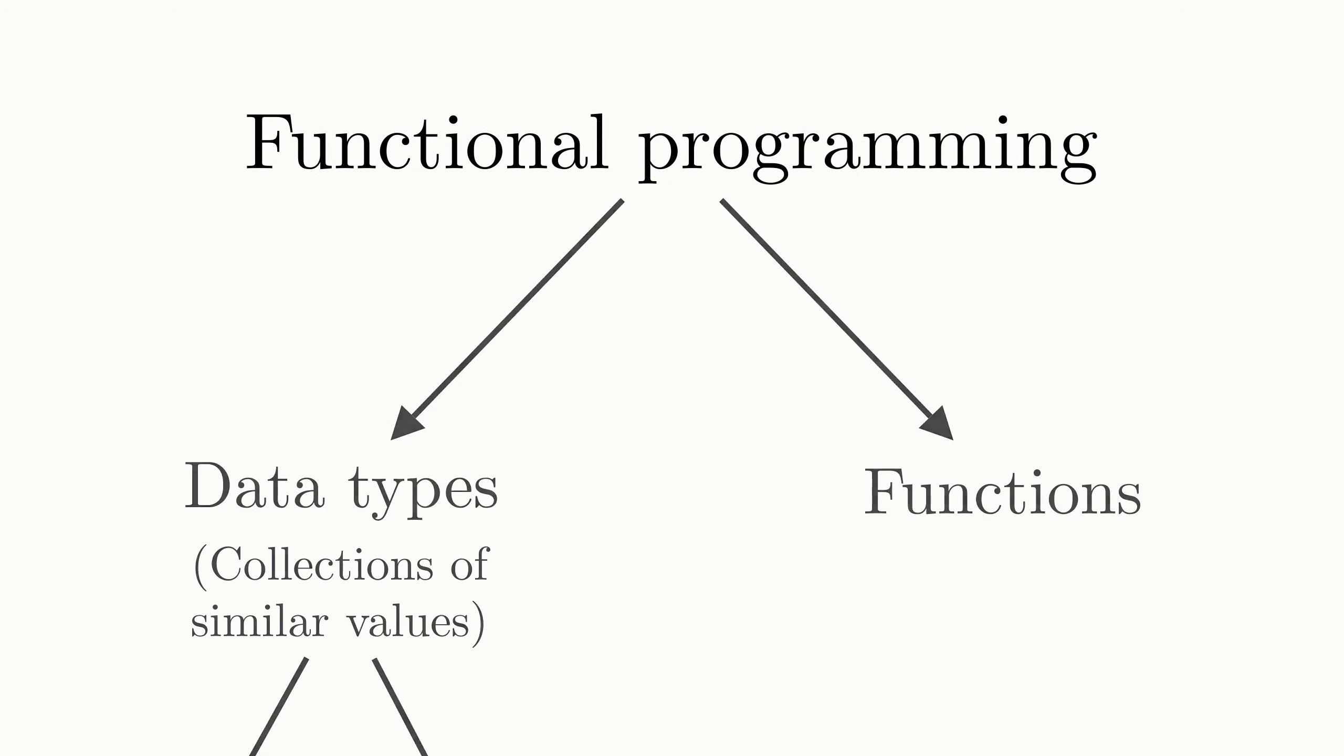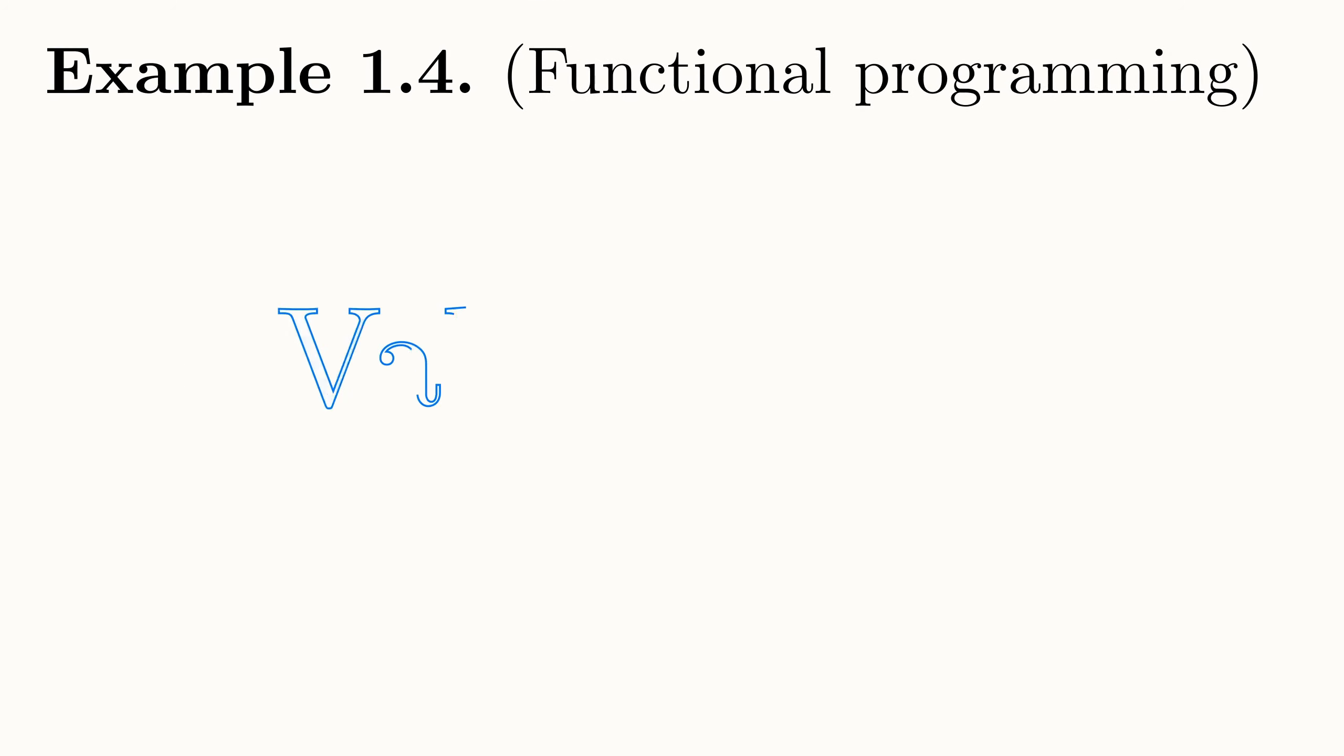As some quick notation, we write the data type of a value after a colon. So we would write true colon boolean to say that true is of type boolean. Just like we could make new propositions using logical connectives in the category of proofs, we can combine types to make new types. As an interesting example, given any two types a and b, we can create a new type a arrow b, which contains all functions that go from a to b.